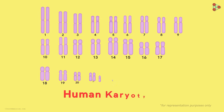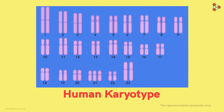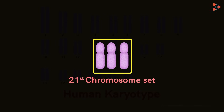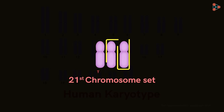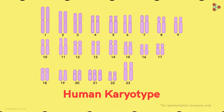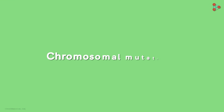This is a representative karyotype of a human. Can you try to give some conclusions from it? It may look perfectly normal, but notice this set — the 21st chromosome set. Instead of having a normal pair of chromosomes, here we find a triplet. Any change in the number of chromosomes creates a lot of defects in the normal functioning of the body. On this note, let's understand chromosomal mutations.